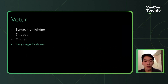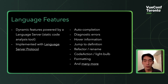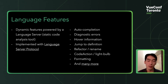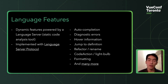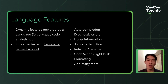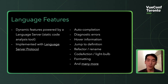Let me explain a little bit about language features. I use this term to describe all the features implemented through language server protocol, such as auto completion, diagnostic errors, and hover information. These are dynamic features powered by a language server — in the context of Vetur, that's the Vue language server. The Vue language server offers these functionalities through LSP, and I use 'language features' as an umbrella phrase to describe all of them.